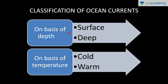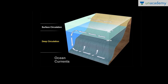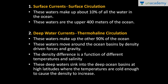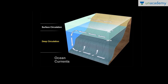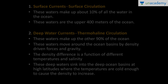Now, the classification of ocean currents: one is on the basis of depth — that is, surface and deep ocean currents — and the second is on the basis of temperature — cold and warm ocean currents. For depth classification, surface circulation covers 0 to 400 meters, and these surface currents make up about 10% of all the water in the ocean, representing the upper 400 meters.